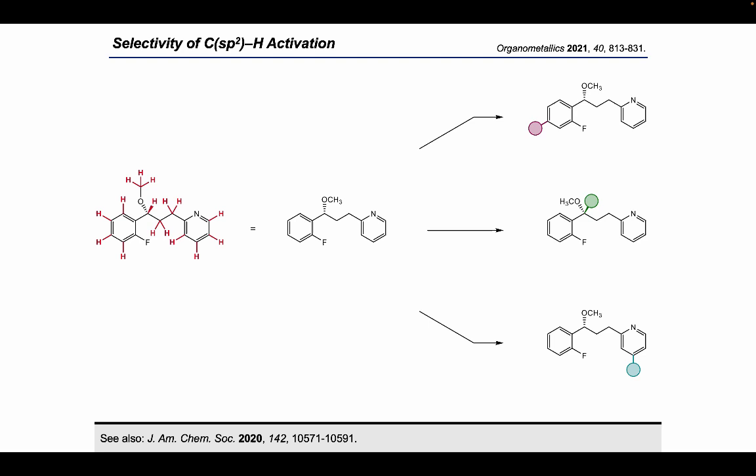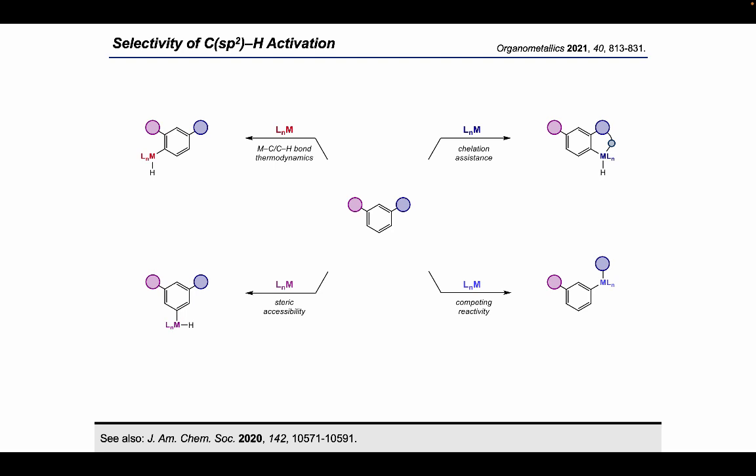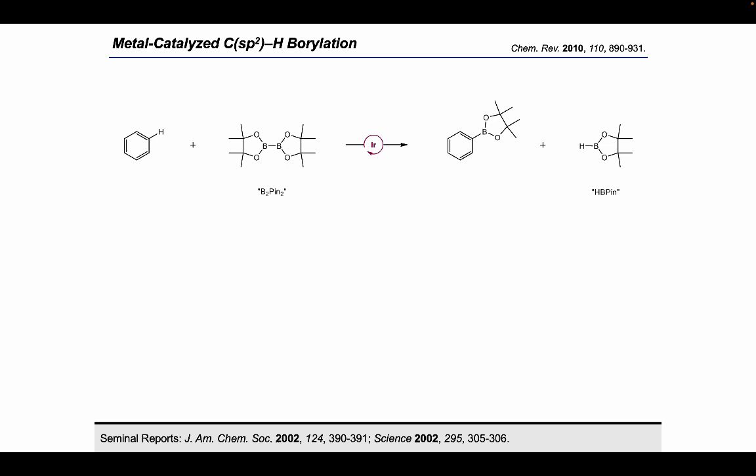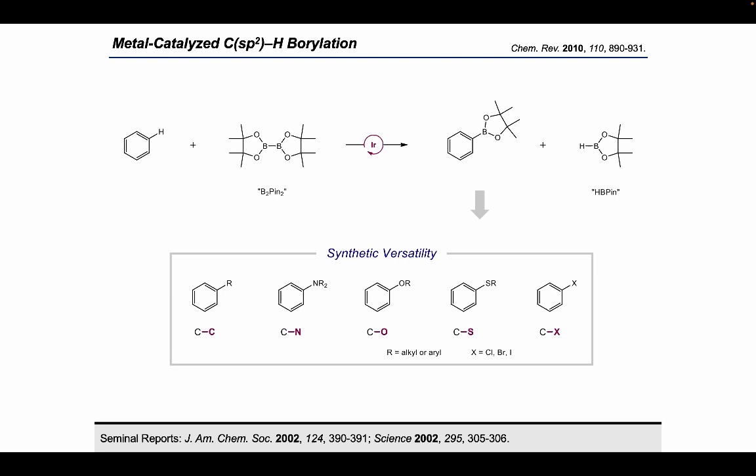Factors such as C-H bond strengths and steric environments can affect a catalyst's preference for activation of a given site over all the others. The existing functionality on the organic substrate can introduce additional biases, whether by coordinating to a metal catalyst and directing C-H activation at a particular site, or by participating in competing chemical reactions. Among the most common C-H functionalization reactions is C-H borylation, where an organic substrate is treated with a boron reagent, most typically B2Pin2, in the presence of a metal catalyst.